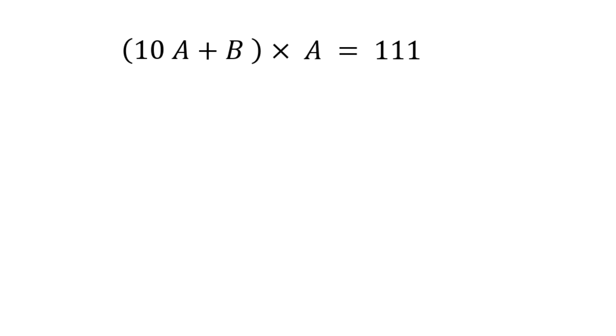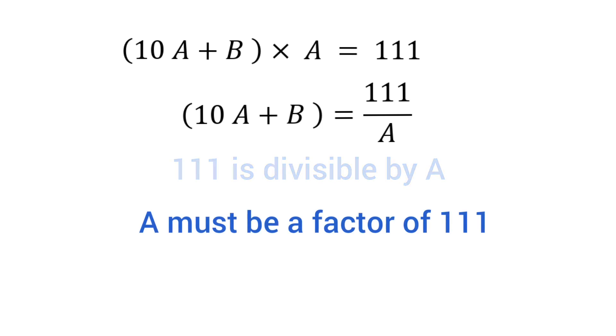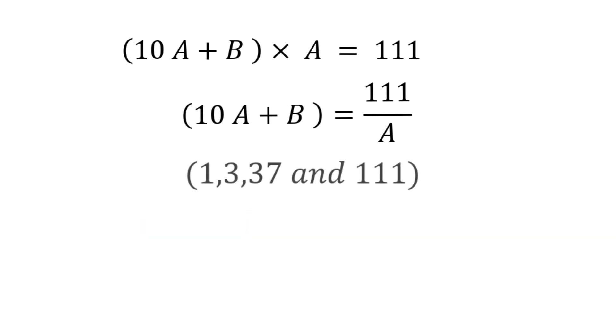We can write it as 10 times A plus B equals 111 divided by A. It means that 111 is divisible by A. So A must be a factor of 111. We know that 111 has four factors which are 1, 3, 37, and 111, in which 1 and 3 are only single digit. So the value of A either could be 1 or it could be 3.